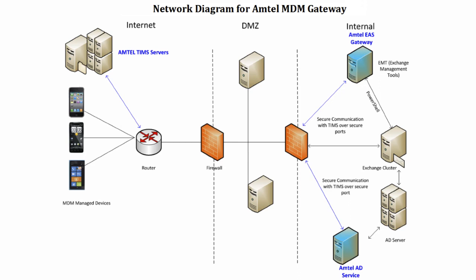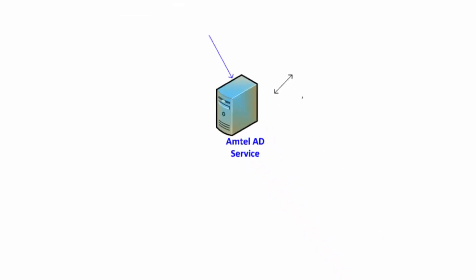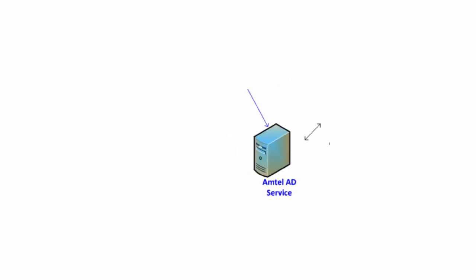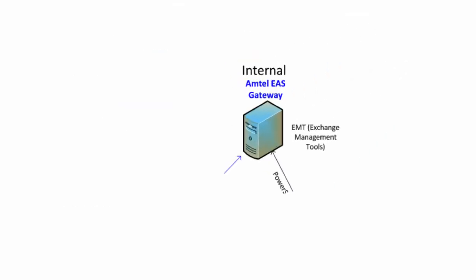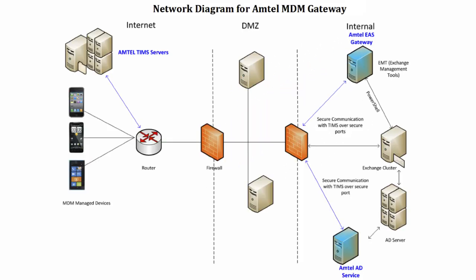The Gateway itself has two components: the Active Directory and LDAP service that pulls your user information, and the EAS Gateway that controls mobile devices connecting to your Exchange ActiveSync.